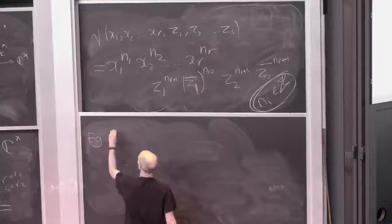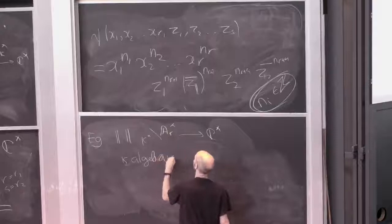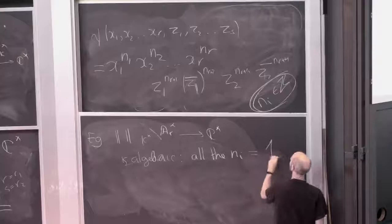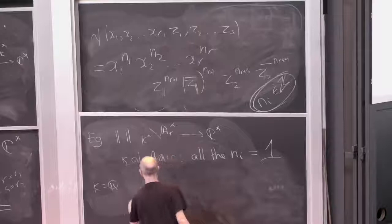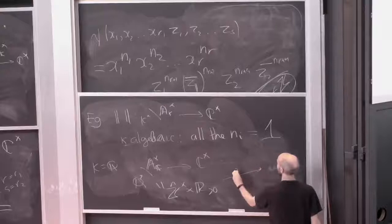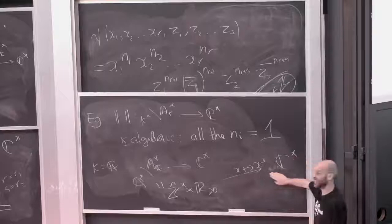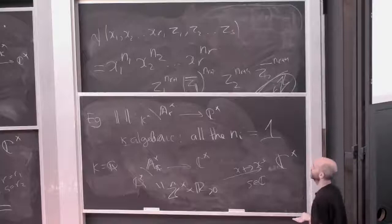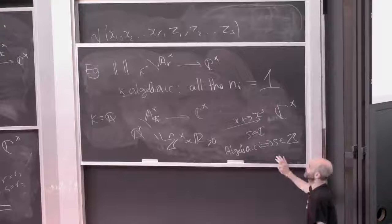When we did k equals Q and looked at AQ* over Q* to C*, we observed this is Z-hat* cross the positive reals. On the positive reals, a random Grössencharacter sends x to x^s. That's what a random Grössencharacter for Q looks like: a Dirichlet character and a character of the positive reals x goes to x^s for s a complex number. That character is algebraic if and only if s is an integer.